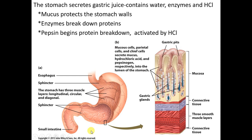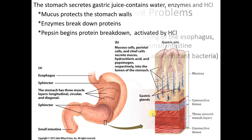The stomach is very muscular. It takes solids and liquids and churns them into a liquid called chyme, which moves on to the small intestine. Read through the information on the stomach.